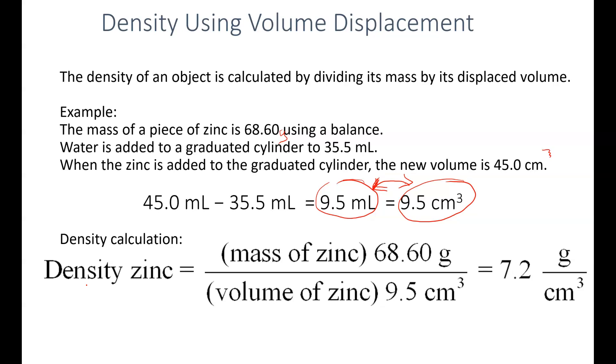If I want to calculate my density of the zinc, I would take the mass of the zinc from my balance—so 68.60 grams—and divide by my volume of zinc, 9.5 cubic centimeters. I divide these two values and I get 7.2 grams per cubic centimeter. Keep in mind I've rounded this to two significant figures because this value has four significant figures, this value has two, so my final value has to be rounded to two significant figures.